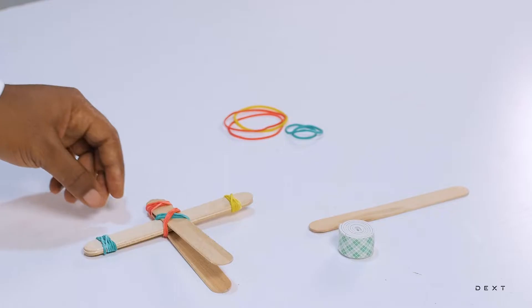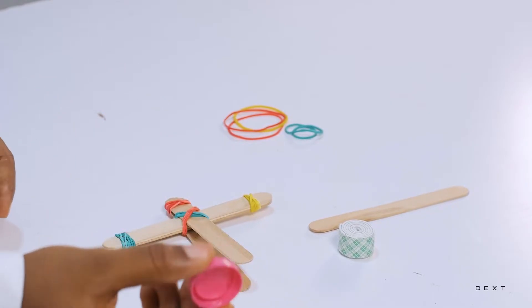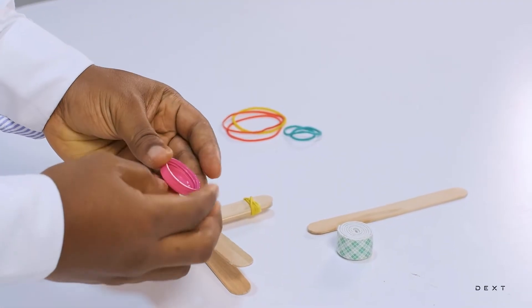Now, the next thing you are going to do is that we are going to place a holder for our paper. Now, it's just an ordinary bottle top.